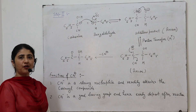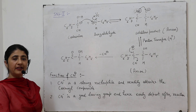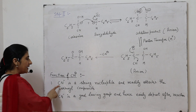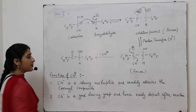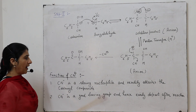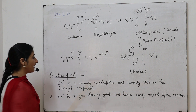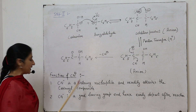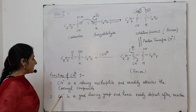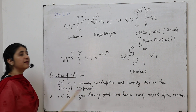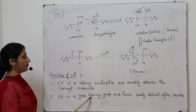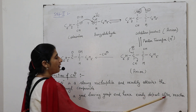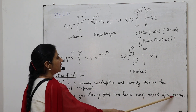What is the function of CN⁻ in this reaction? First, CN⁻ is a strong nucleophile — it can readily attack the carbonyl compound. The second function is that CN⁻ is a good leaving group, so it is easily departed after the reaction.